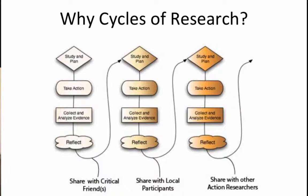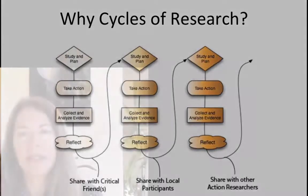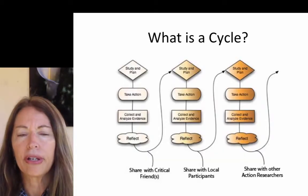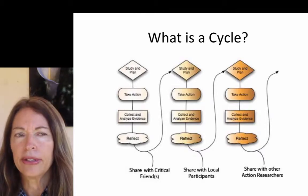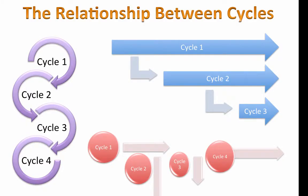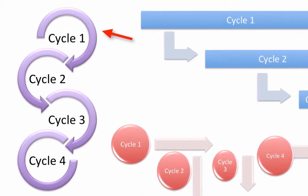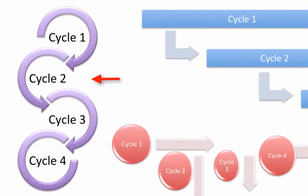So it is important to think about your cycles, but it's often hard for novice action researchers to figure out when a cycle starts, when it ends, and how to move from one cycle to the next. The relationship between cycles is not obvious, and there is of course the normative model that you see in all of the illustrations of action research.